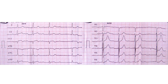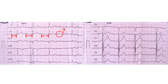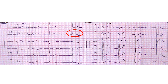We see ST segment elevation in leads 2, 3, and AVF. Also, the PR intervals before the first three QRS complexes are prolonged. The first PR interval is shorter than the second and third. The P wave after the third QRS complex appears to be non-conducted, and the fourth QRS complex is an escape beat.